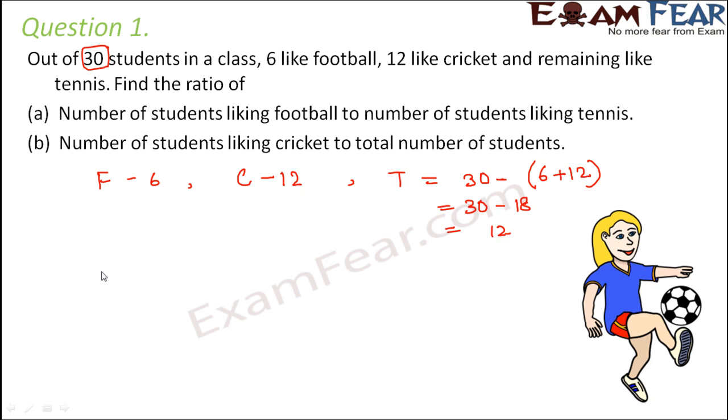So in the first part, we have to find out the number of students liking football to the number of students liking tennis. So how many likes football? 6. How many likes tennis? 12. So this is 6 by 12.